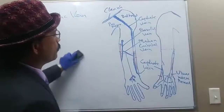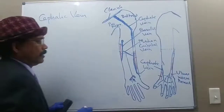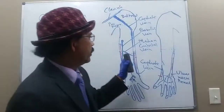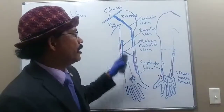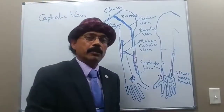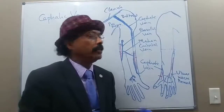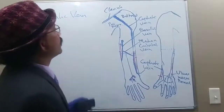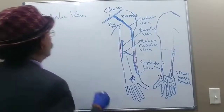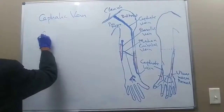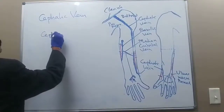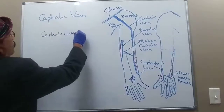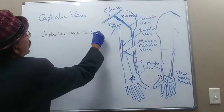The cephalic vein is a very important vein. It is chosen for venipuncture, like the median cubital vein or basilic vein, to draw blood, to transfuse blood, or to pass a catheter. It is clinically important. The cephalic vein is connected to the basilic vein.